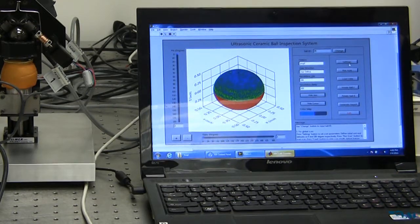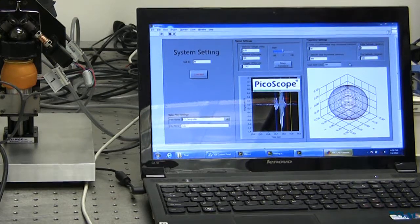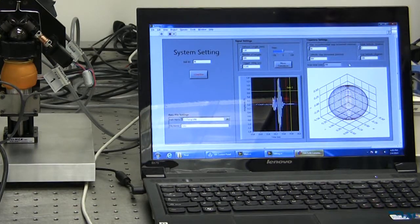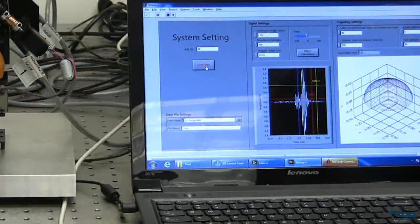Click the setting button to set up the data saving options, signal, and scan trajectories. Then press the run scan button to start scan.